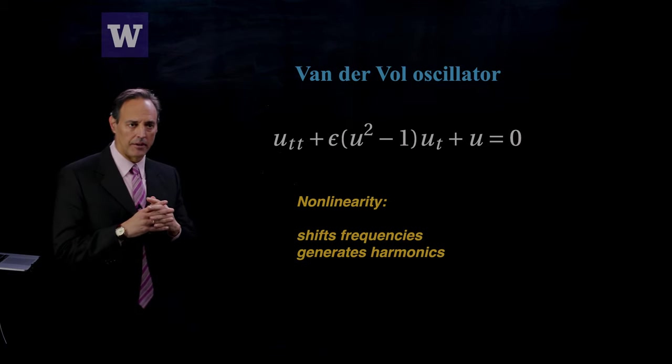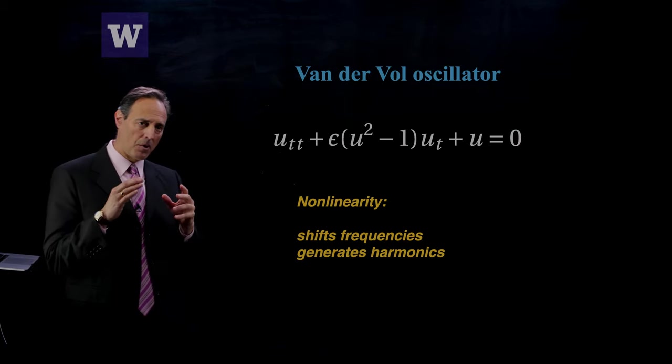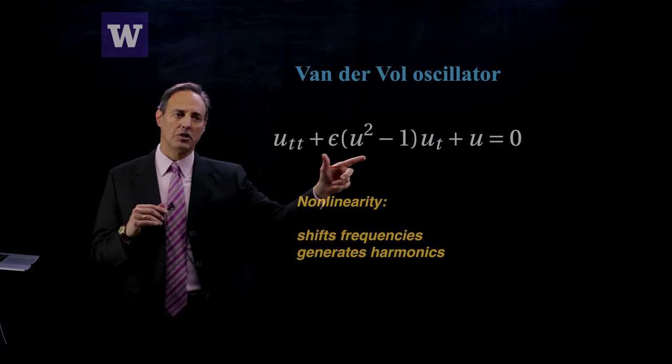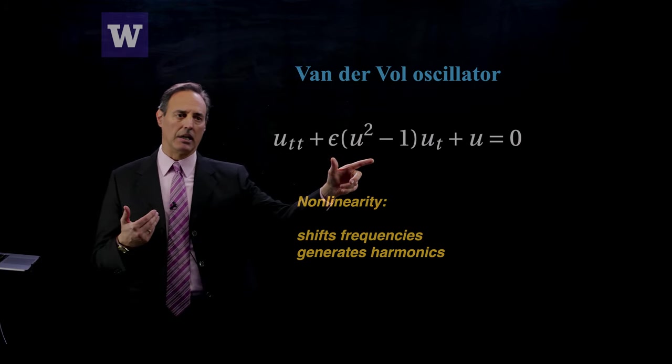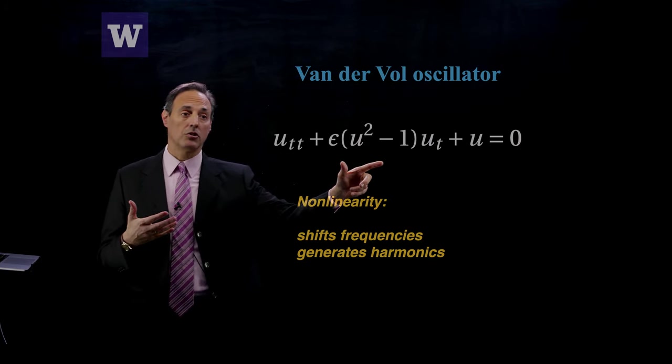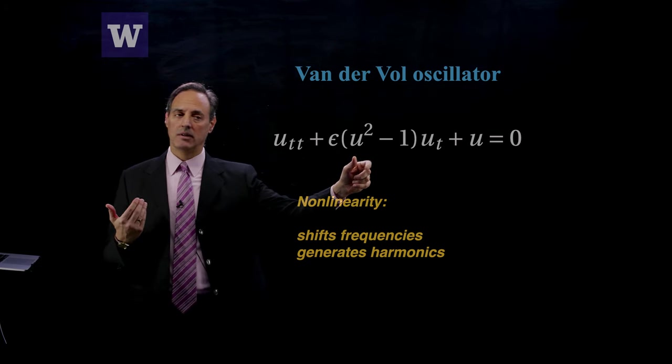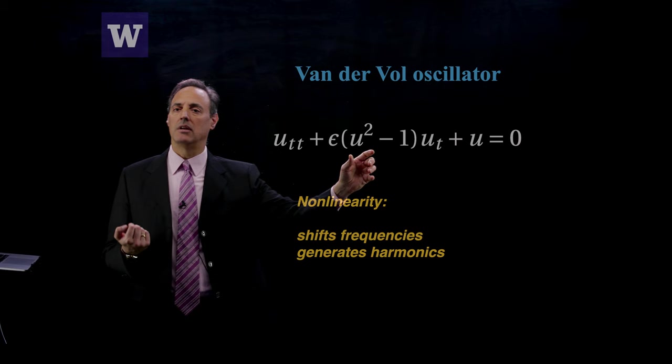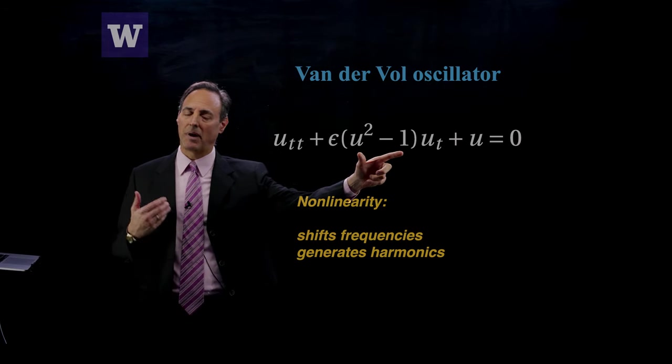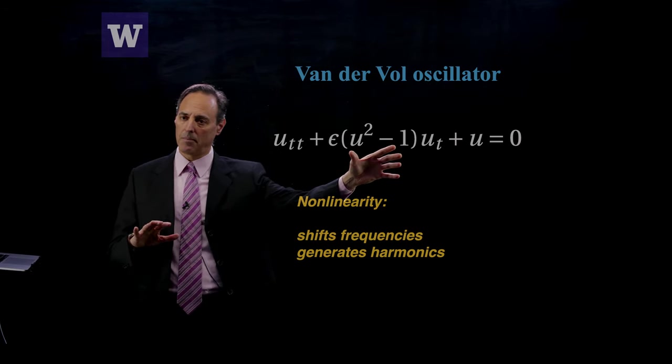Here is the van der Pol oscillator and I'm going to define a small parameter epsilon which is related to the damping. This is a nonlinear damping term where if u is bigger than one then this is actually damping. If u is bigger than one this is a positive number and creates a damping effect.